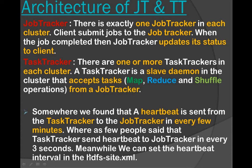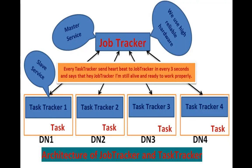We can configure this interval time in that file. Here is a simple diagram of the architecture of job tracker and task tracker. The job tracker is a master service — we should always use high reliable hardware for it, because if the job tracker is lost, every task will be lost since it manages and schedules all tasks. For task tracker, we should use commodity hardware.